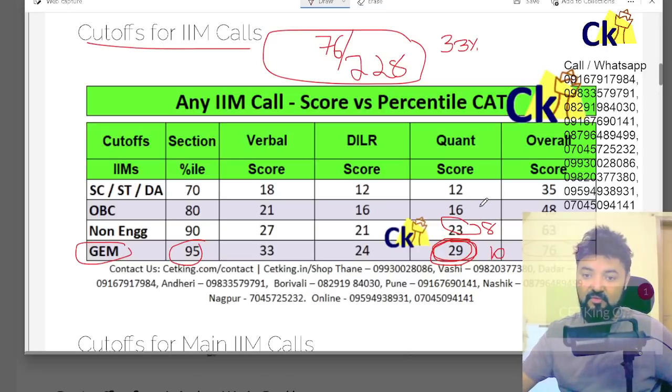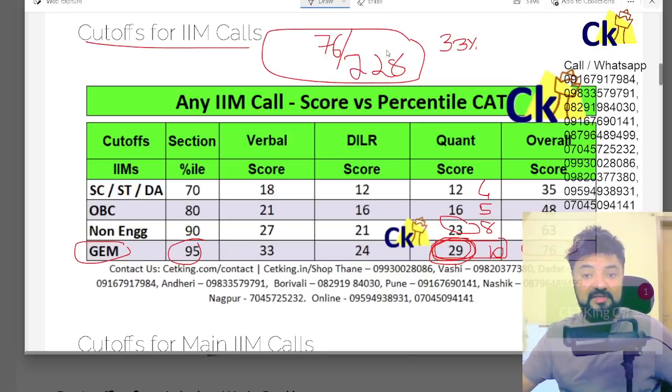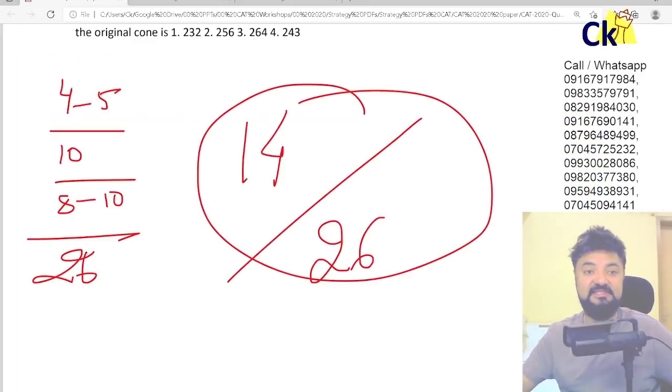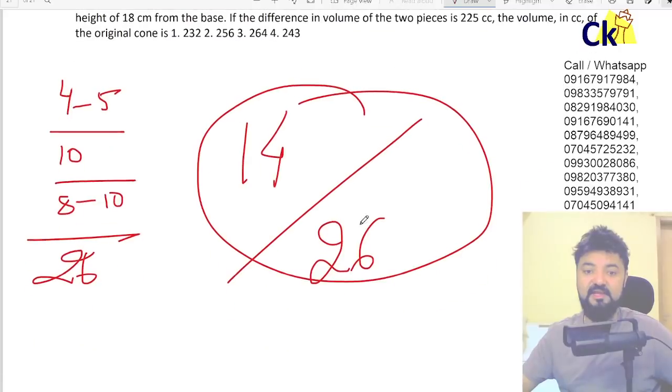OBC, 5. OBC, EWS, 5 questions correct. SCST, 4 questions correct. Look at that. Engineers have to do 10 questions. So, paper is not made pro engineers. Paper is made against engineers.